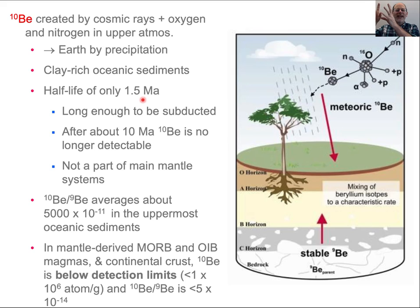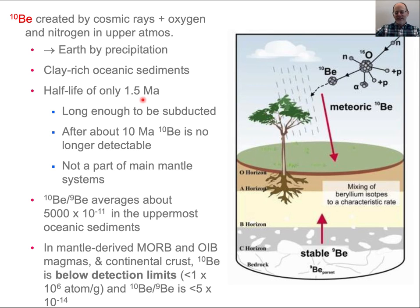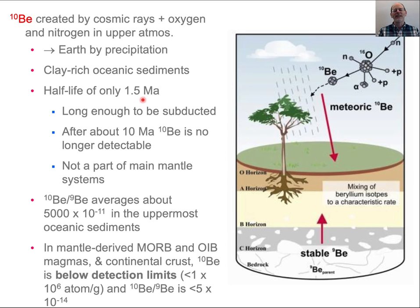This melt goes up, undergoes mixing and differentiation processes, and gets erupted onto the surface before it has completely radioactively decayed. So that whole process — production at the surface, subduction, dewatering, entrainment into fluid, going into the mantle, melting, getting melts up to the crust, differentiating, mixing — all of that has to happen within 10 million years, because after that all of the beryllium-10 has decayed away.